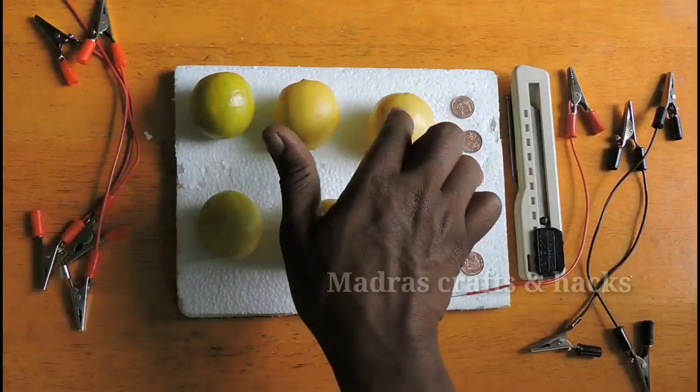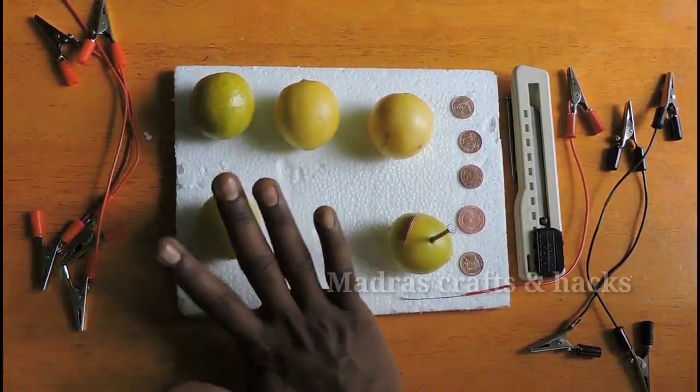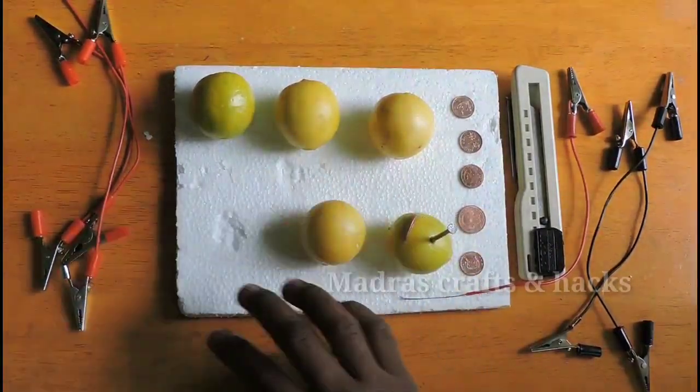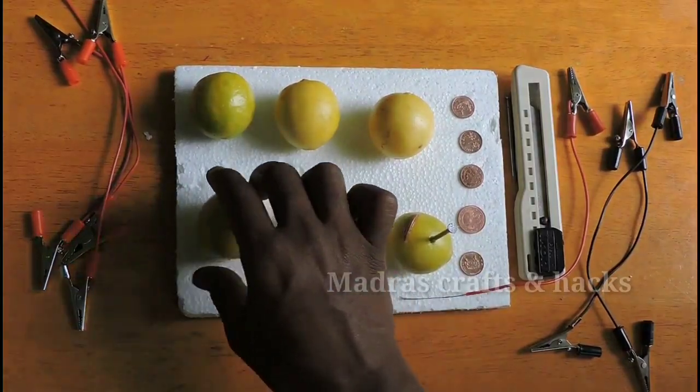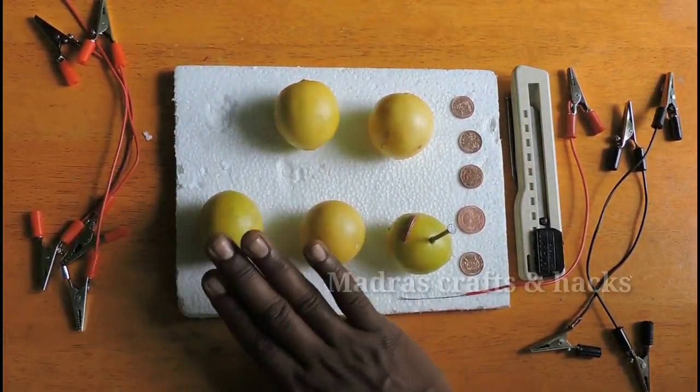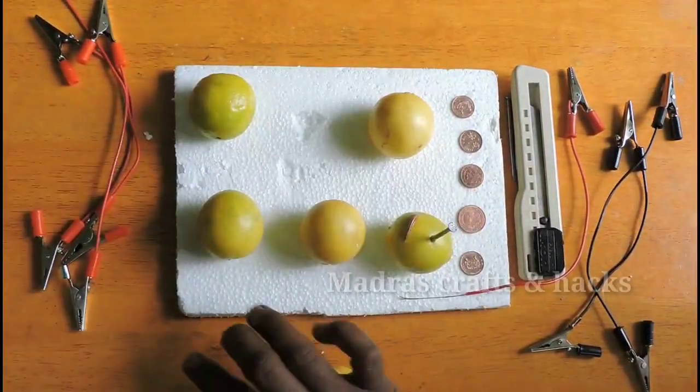In order to illuminate a 3 volt LED bulb, we need to connect few more lemons in a series connection. First, we will squeeze all the lemons so that it will be juicy.